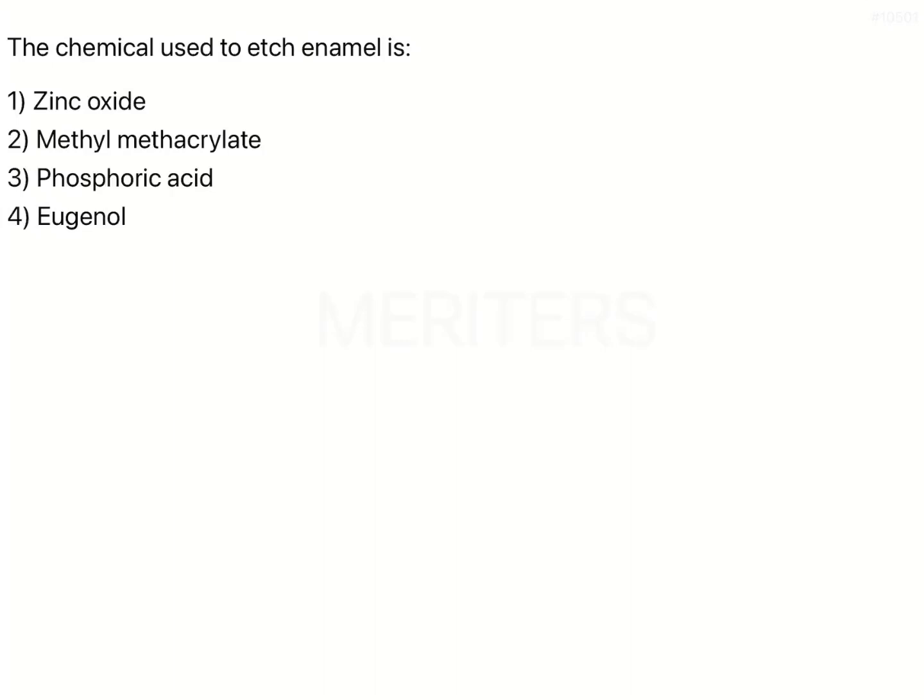The question is: the chemical used to etch enamel. Etching of enamel is primarily done to ensure that your restoration, composite restoration, or even your sealants, pit and fissure sealants, can penetrate into your enamel micro porosities.